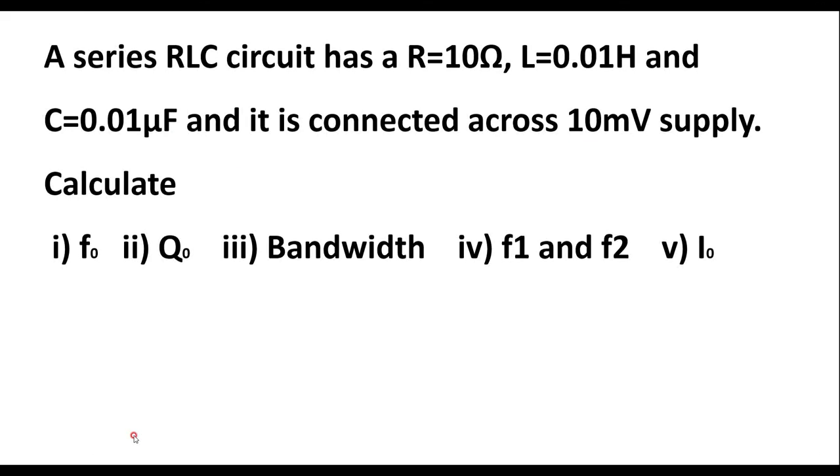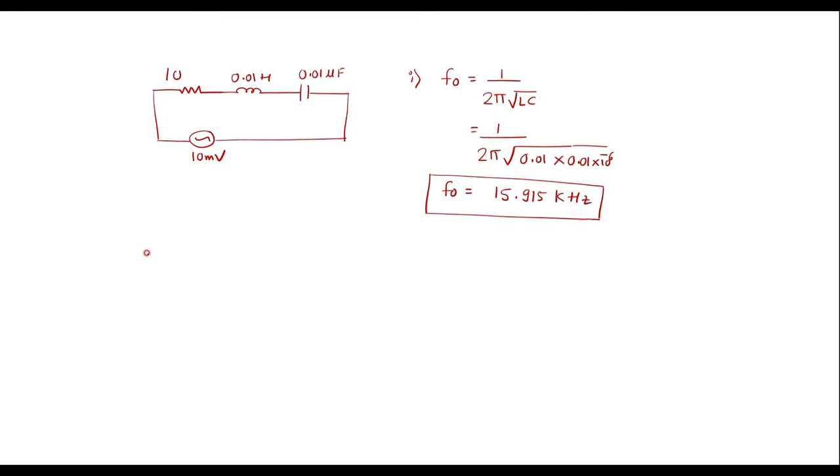Next we have Q₀, which is the quality factor. Quality factor can be calculated using the formula 1 over R times √(L/C). That is 1 over 10 times √(0.01 / 0.01 × 10⁻⁶). Simplifying this, we get Q equal to 100.